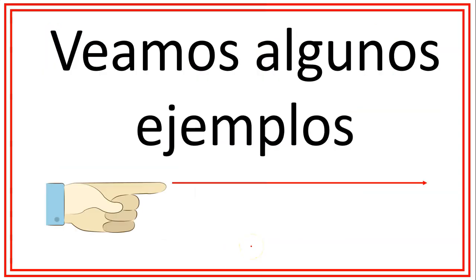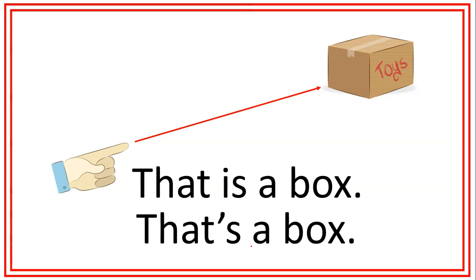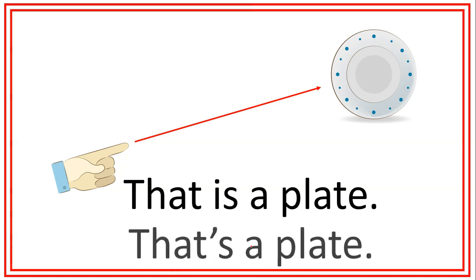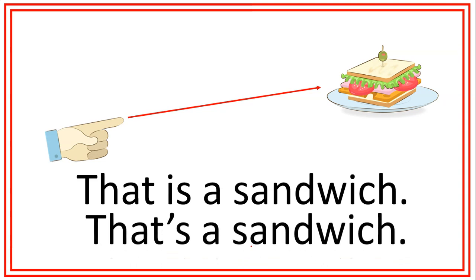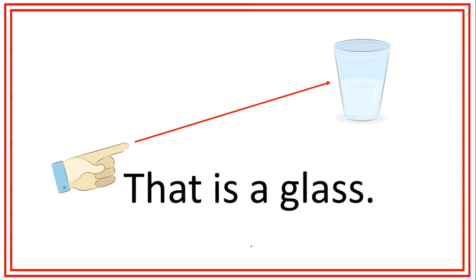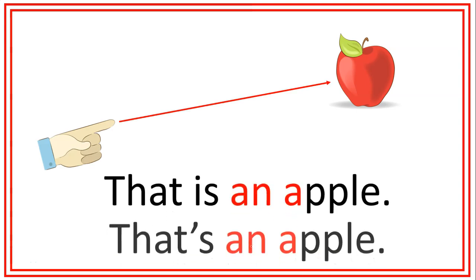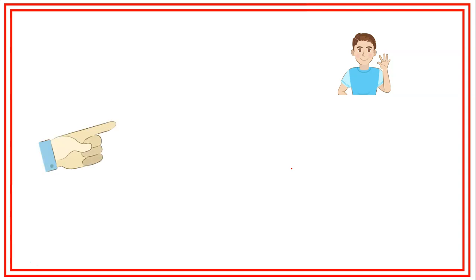Vamos a ver algunos ejemplos. That is a box — esa es una caja. That's a box. That is a plate — ese es un plato. That's a plate. That is a sandwich. That's a sandwich — ese es un sándwich. That is a glass. That's a glass — ese es un vaso. That is an apple. That's an apple. Recuerden: utilizamos la palabra an cuando la siguiente palabra comienza con una vocal.